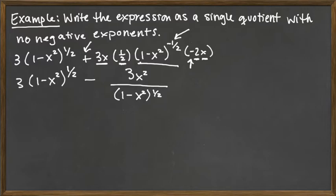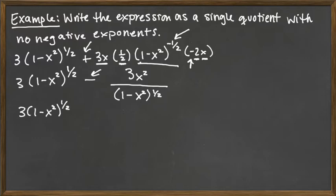Now we've written the expression without any negative exponents, but we haven't written it as a single quotient yet. We've got two terms separated by a subtraction sign, and we're going to have to combine those two terms. The way we combine terms involving fractions is to get a common denominator. The term before the subtraction sign is not fractional — we can think of it as over 1 — and the denominator we need is the one from the second term.